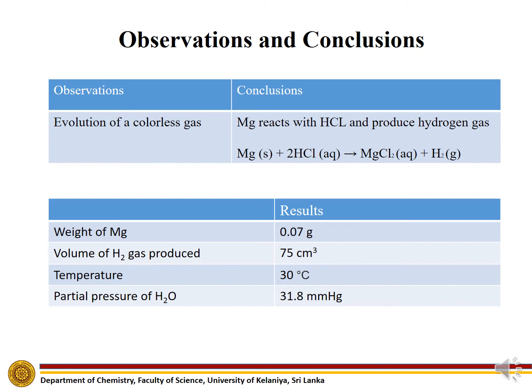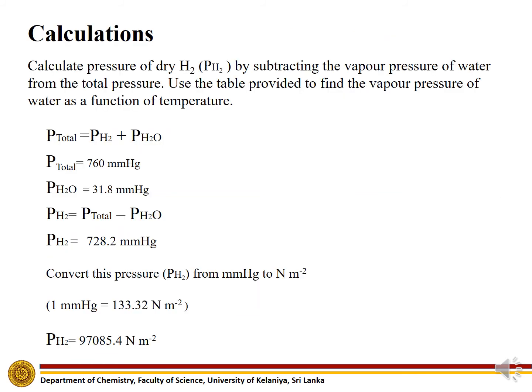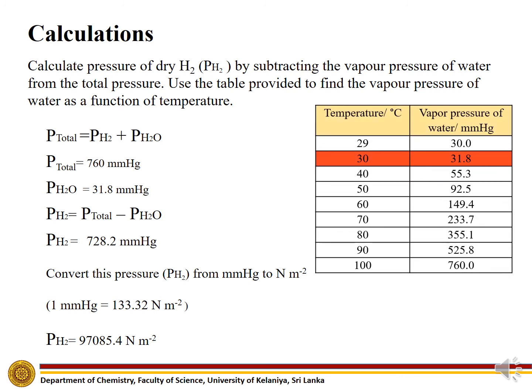Observations and conclusions: Magnesium reacts with HCl and produces a colorless gas. The weight of the magnesium strip was 0.07 grams. The volume of hydrogen gas produced was 75 cubic centimeters. Temperature was 30°C, and the partial pressure of water vapor was 31.8 mmHg. The pressure of dry hydrogen is calculated by subtracting the vapor pressure of water from the total pressure.